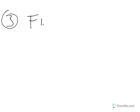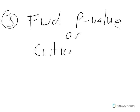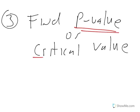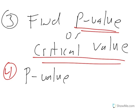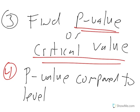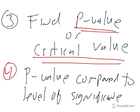Step three, you can find a p-value or a critical value. A p-value is a probability; a critical value is an event. Therefore, in step four, the p-value is compared to our level of significance, alpha.